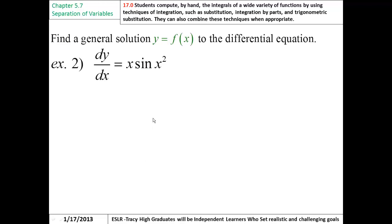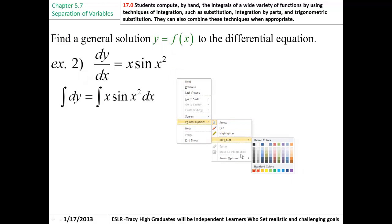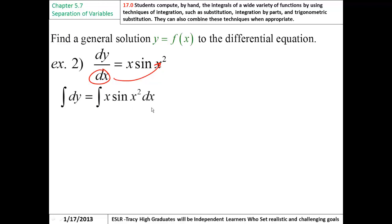Alright, here we got another one. Pretty much the same concept, same instructions, and the same scenario. Multiplying that dx over to both sides. And so that shifts over to here. And you get dy equals x sine of x squared dx. This bit of integration is a little harder. Although, we should know that this side is just going to turn out to be y.